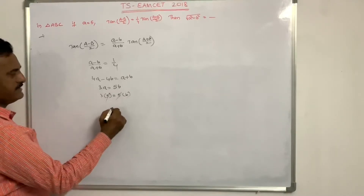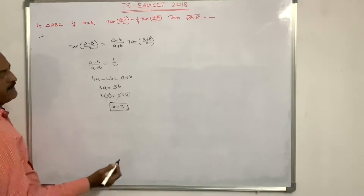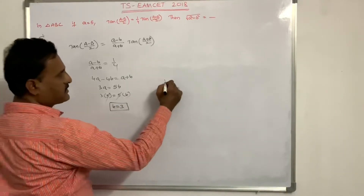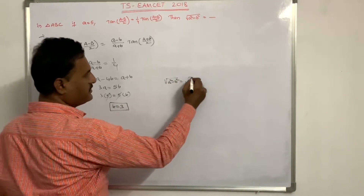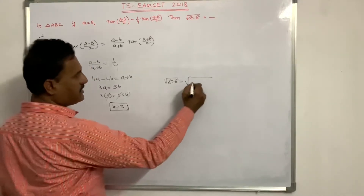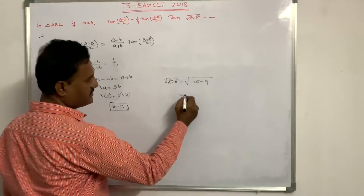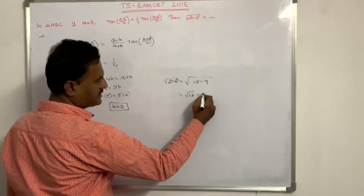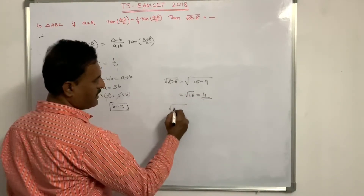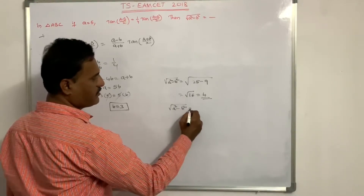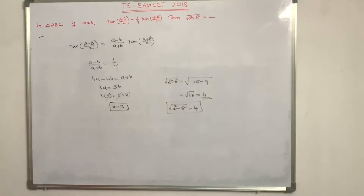Both sides cancel by 5, giving b = 3. Therefore √(A²−B²) = √(25 − 9) = √16 = 4. The value of √(A²−B²) is 4.